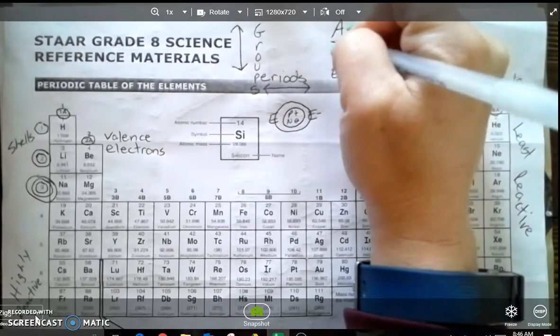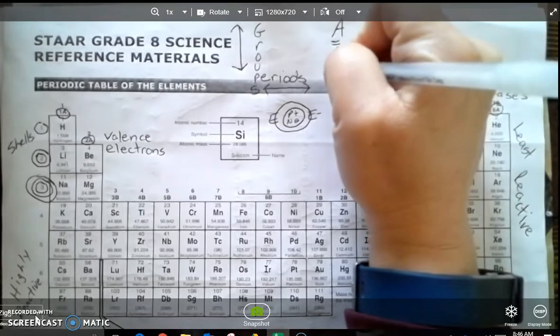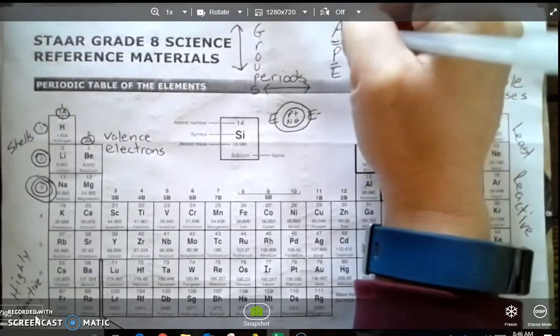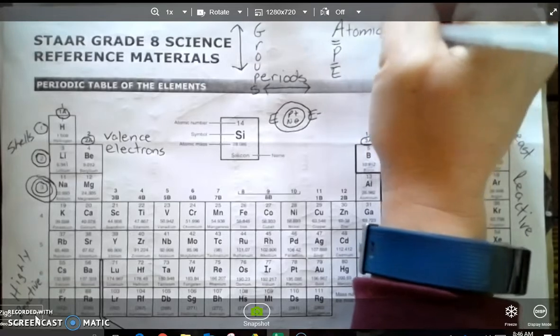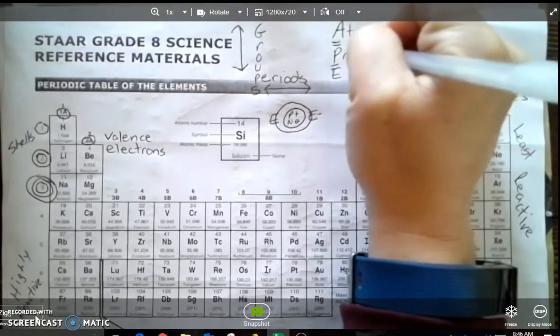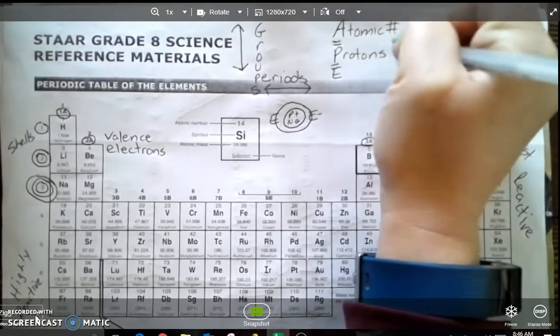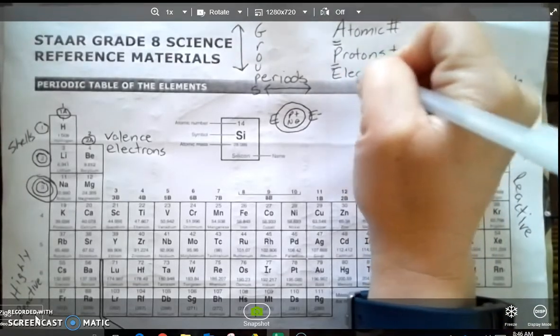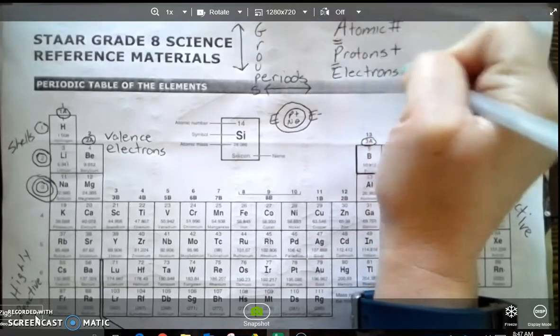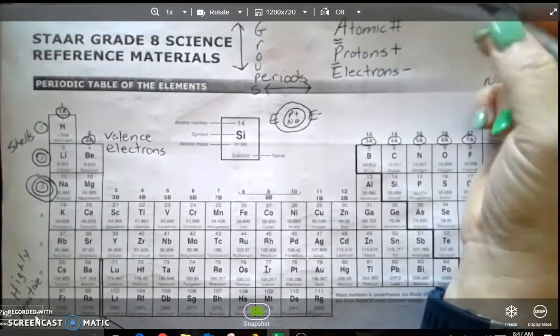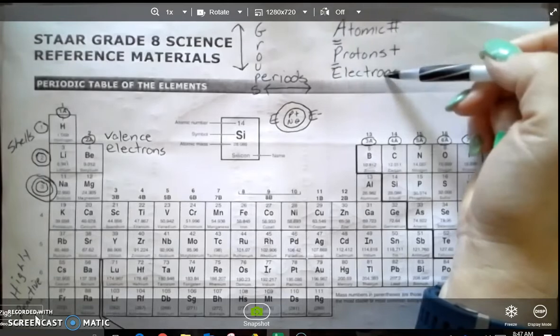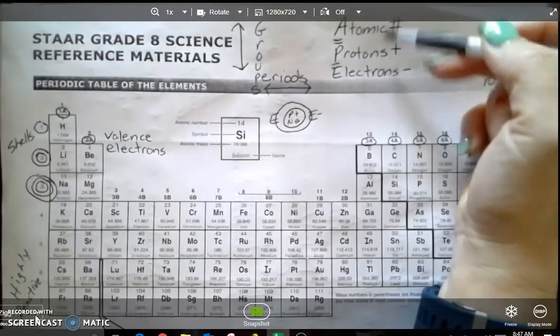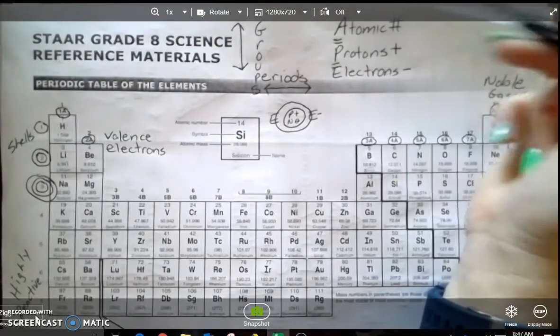Ape, A equals P equals E. So this is for your atomic number, equals to your protons, which is positive, which is equal to your electrons, which is negative. So if you know the atomic number, you know the proton number, you know the electron numbers. If you know any one of these, you can find the other two.